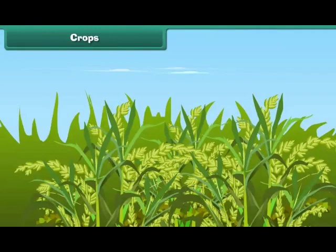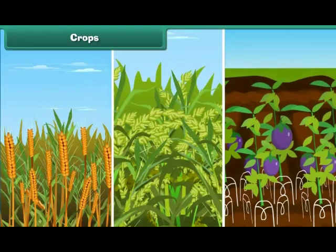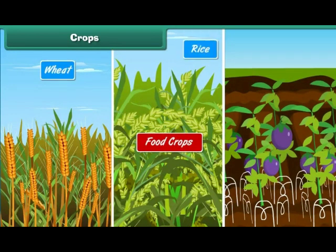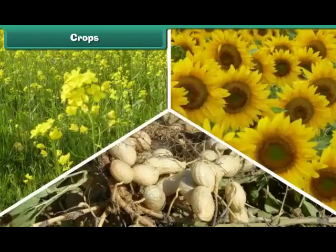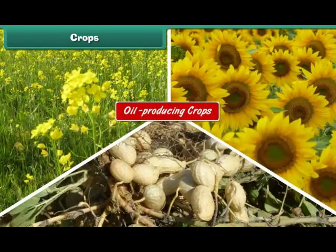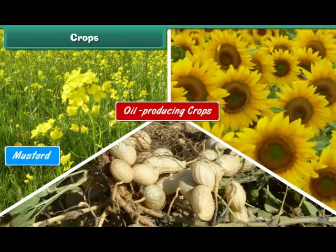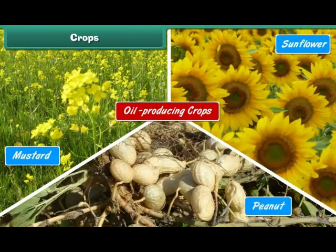Crops: several plants which are grown in fields by farmers and are useful in various ways are known as crops. Crops are mainly of three types: food crops, for example wheat, rice and vegetables; fiber crops, for example cotton and jute; and oil-producing crops, for example mustard, sunflower and peanut.